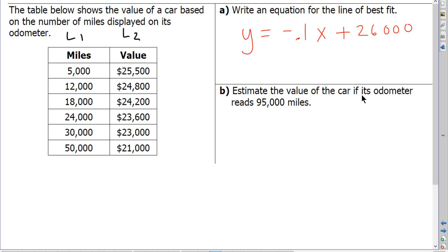Part B says to estimate the value of the car if its odometer reads 95,000 miles. So don't forget, these are the x values, and these are the y values. So if I want to know the value when I have the miles, then that means that I'm going to plug in a 95,000 for the x value. So I'm going to leave this equation as negative 0.1, but instead of an x, I'm going to enter 95,000.